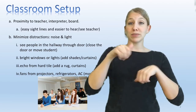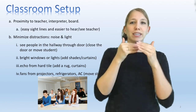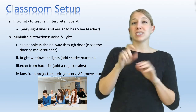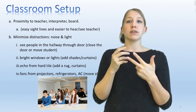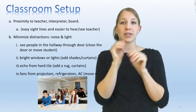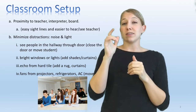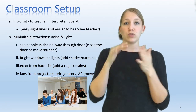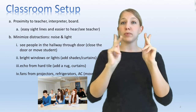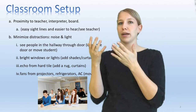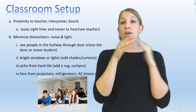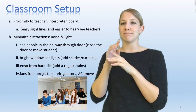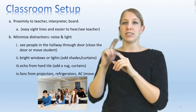First is classroom setup. It's really important for the deaf student to be near the teacher, the interpreter, and the board. The student needs to be able to see all three clearly. Also, distractions need to be minimized for noise and light. For example, if the door is open and people are passing by, the student might be distracted watching people in the hall. You can either close the door, move the student to face a different direction, or move to a different place in the classroom.